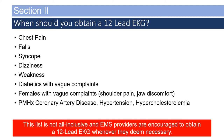When should you obtain a 12-lead EKG? Chest pain and syncope are no-brainers for most providers. But also consider the lift assist, the falls — was that fall precipitated by a cardiac event that is still evolving? Dizziness, weakness, diabetics with vague complaints, or females with vague complaints such as shoulder pain or jaw discomfort. Consider all patients with a history of coronary artery disease, hypertension, hypercholesterolemia, prior MIs, or stenting. This list is not all-inclusive, and EMS providers are encouraged to obtain a 12-lead whenever they deem it necessary.